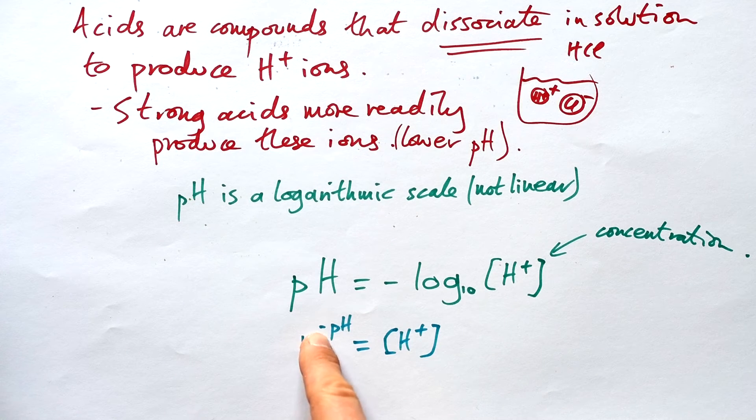Can you see why we have a minus in there? That's because as the concentration of hydrogen ions goes up we want the pH to decrease, so we must have a minus in there.